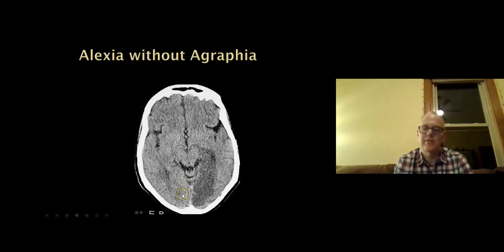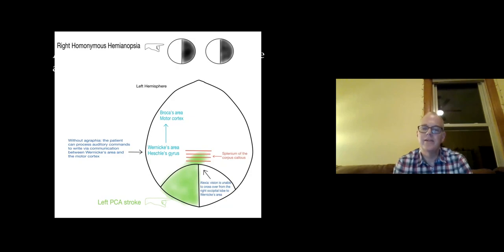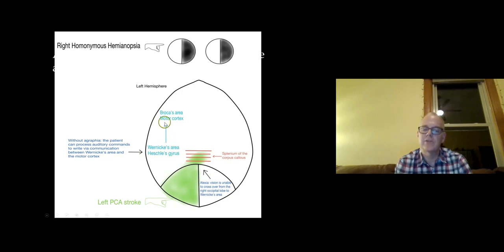We don't see alexia without agraphia with a right PCA stroke — assuming language dominance in the left hemisphere, with a right PCA stroke the words get into the left occipital lobe, which is immediately adjacent to Wernicke's area, so they can read just fine. To summarize: alexia without agraphia occurs because with a left PCA stroke extending to the splenium of the corpus callosum, the patient can see words but can't get them to Wernicke's area. They can write because the ability to write is driven by auditory command going through Heschl's gyrus to Wernicke's area and then forward to motor cortex.